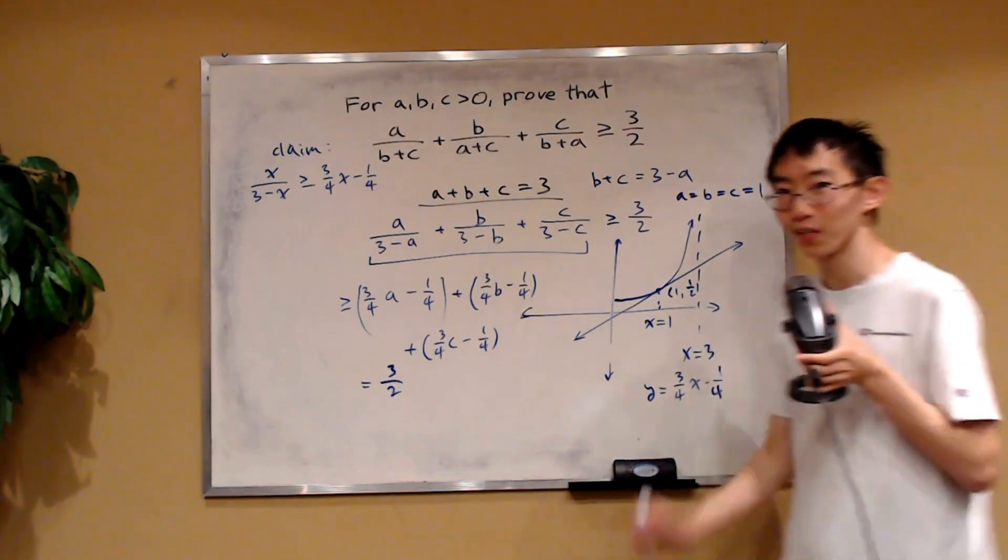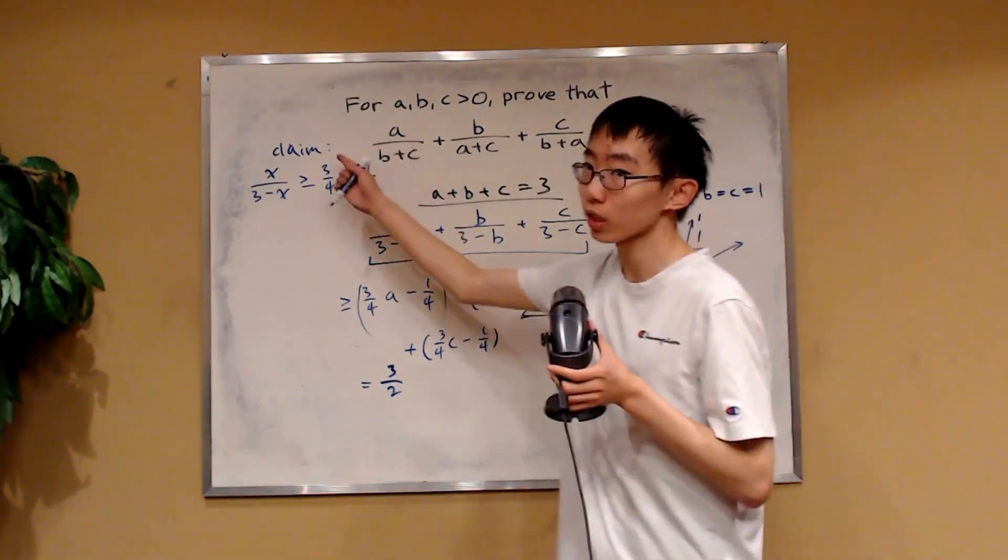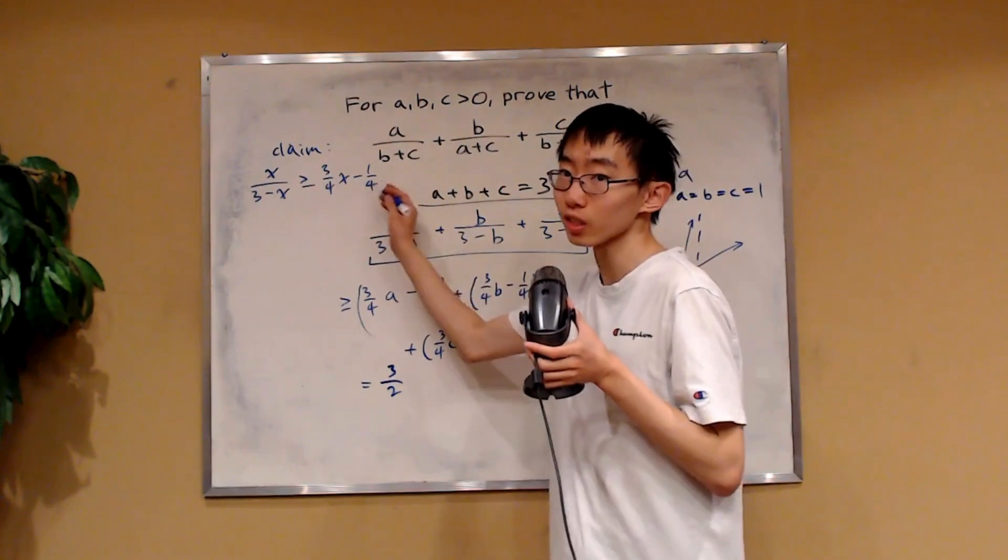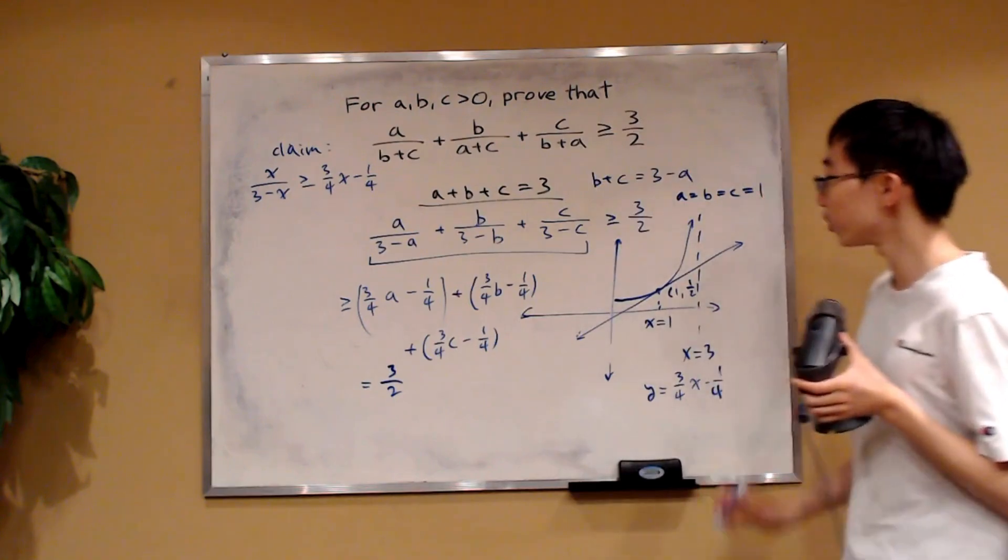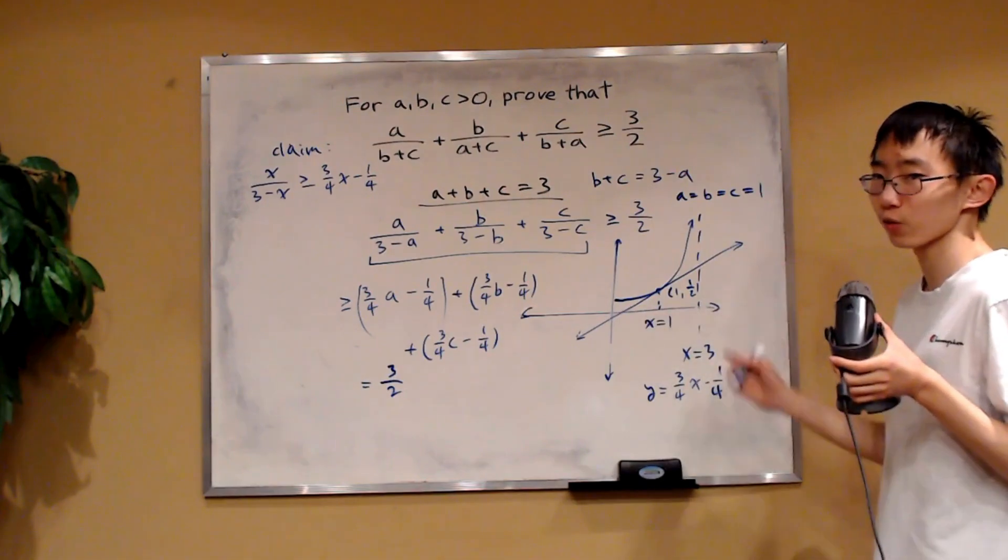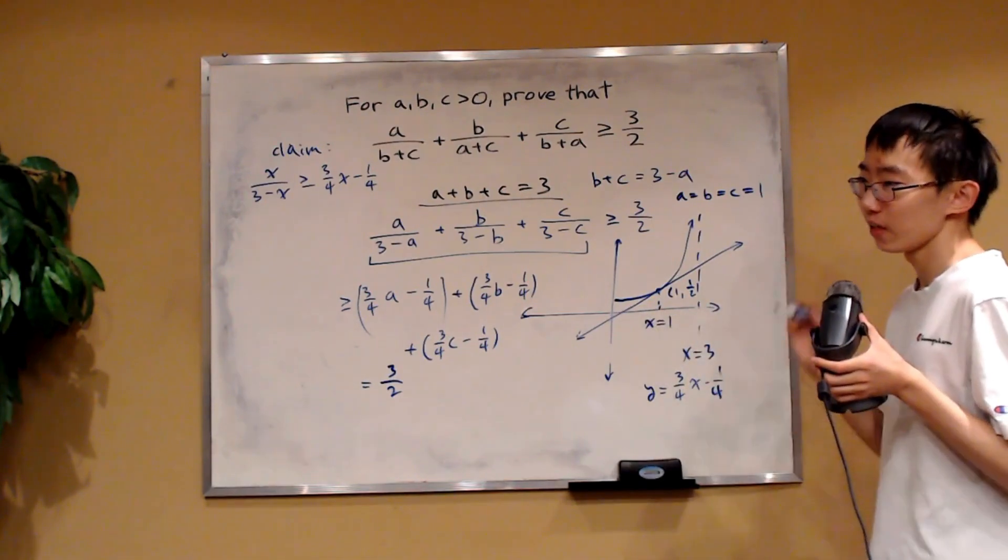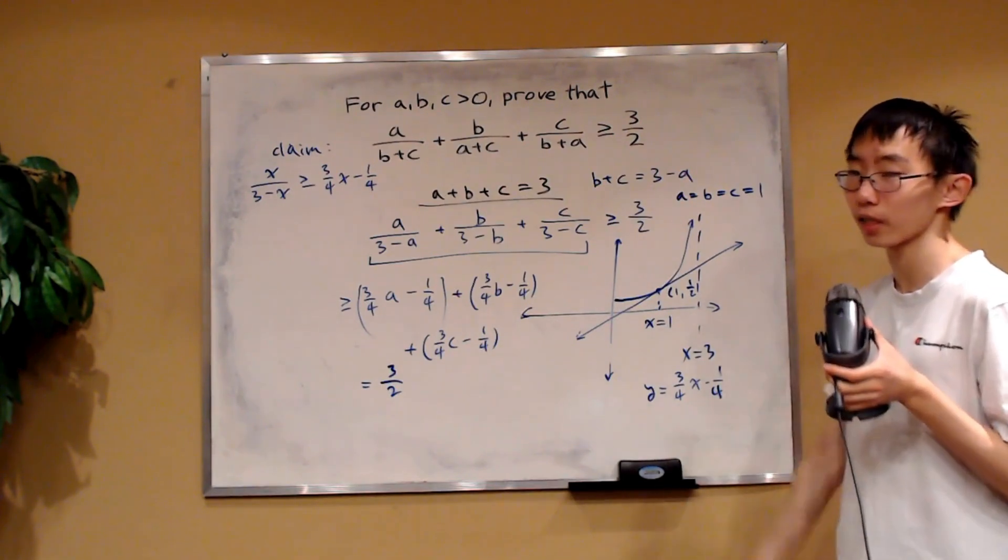No, we are not done. Now, the part that leaves our proof incomplete is this claim. We have not proven this claim yet. We got this claim based off of visual intuition. Visual intuition that this tangent line is, well, tangent. So it looks like it lies below the graph. But remember, derivatives find locally tangent lines, not necessarily globally tangent.